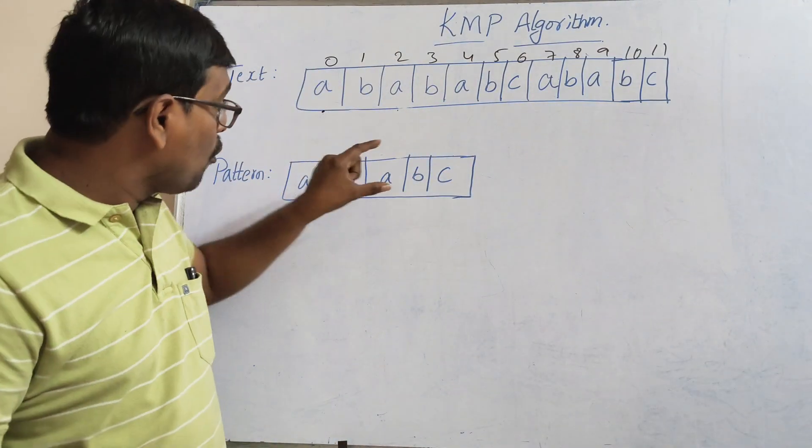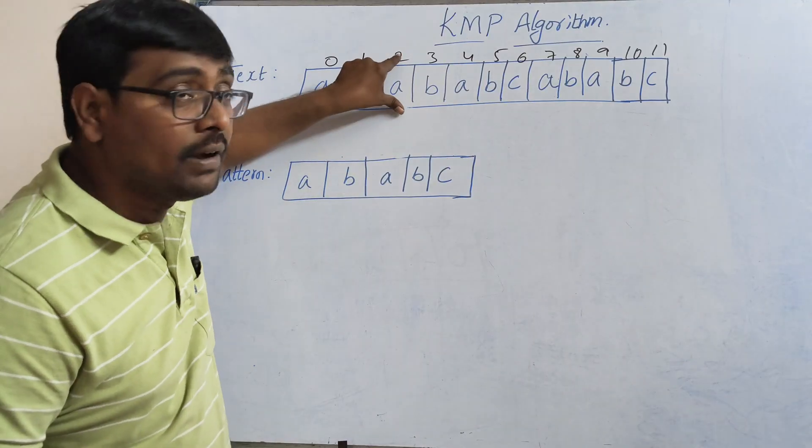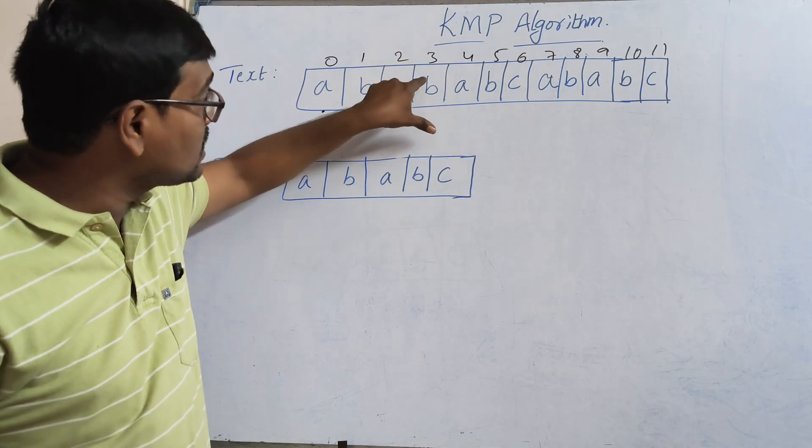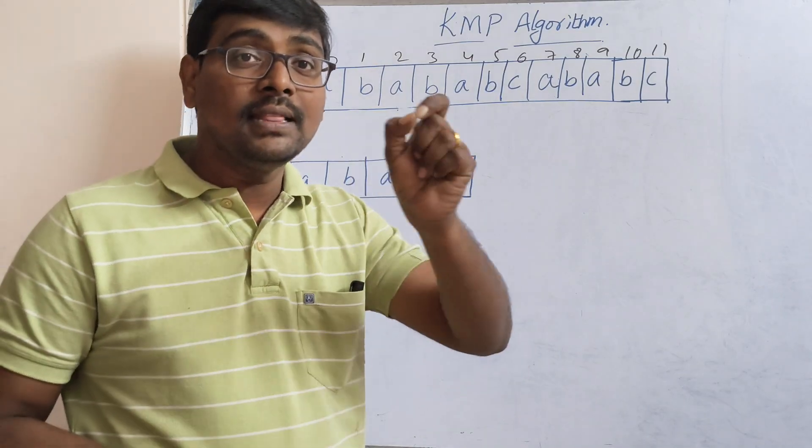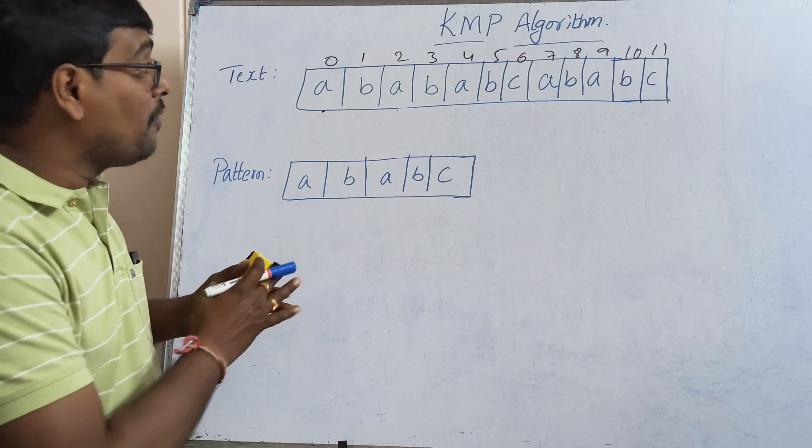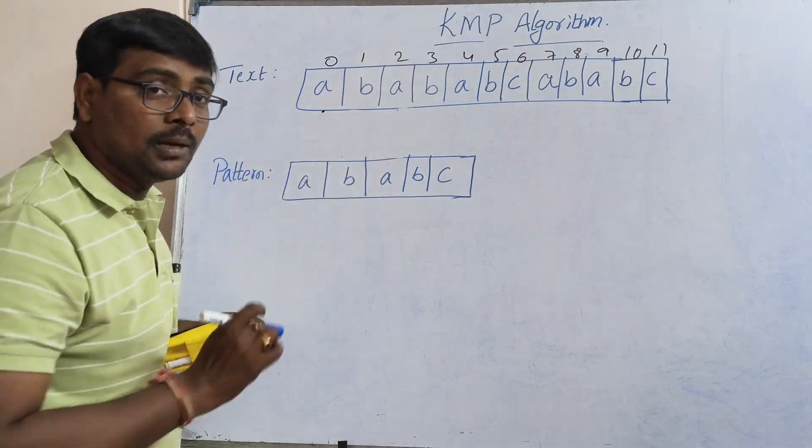Suppose if this pattern is available, we are returning the index - that is, the position of the pattern in the text. Now for this KMP algorithm, the procedure is very simple.